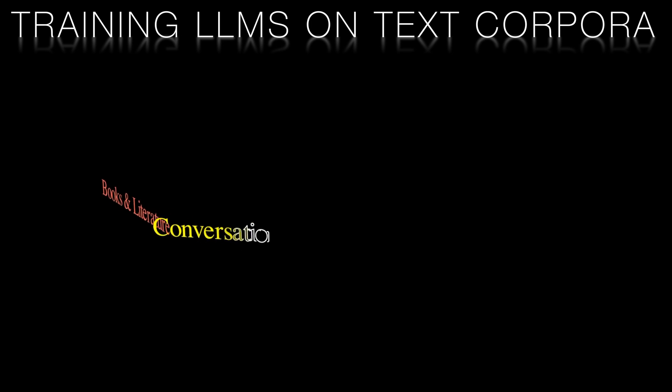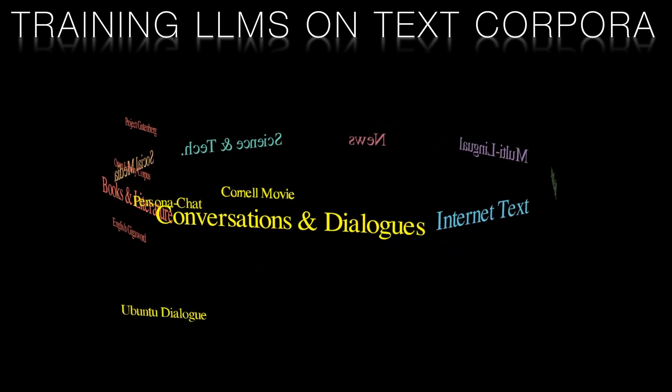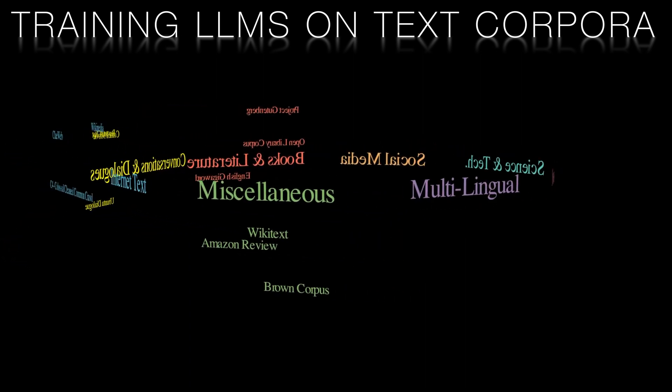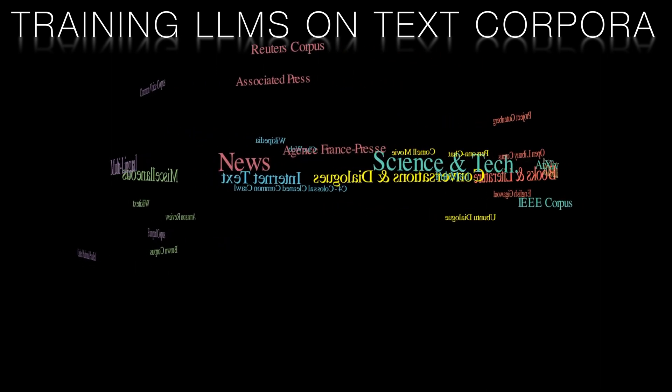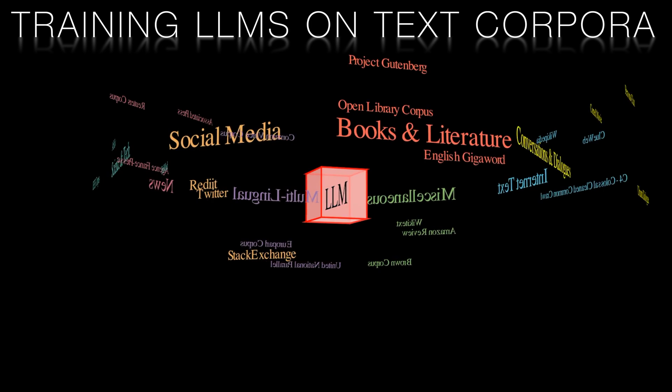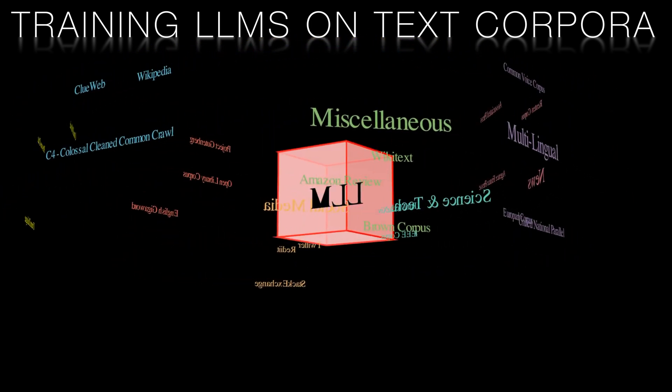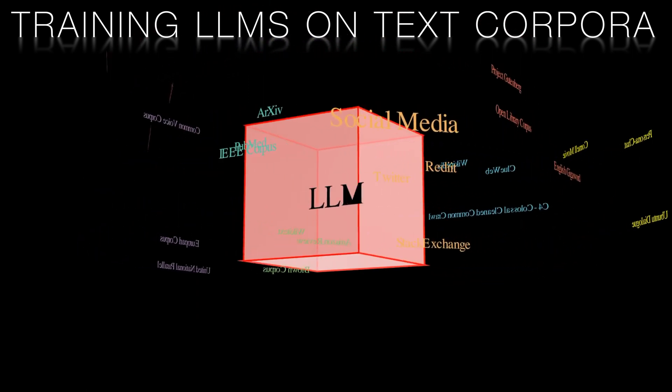During the training process, LLMs are fed vast amounts of textual data, learning patterns, structures, and relationships within the text. This enables the models to generate responses that mimic human-like language. They improve over time by continuously comparing their generated output to the input data they receive, refining their understanding of language and the relationships between specific words and phrases.